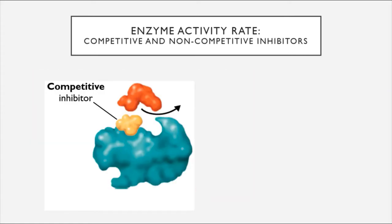Another factor that influences enzyme activity is the presence of molecules called inhibitors, which inhibit the ability of an enzyme to do its job. Inhibitors are molecules that can impede the enzyme by either interacting with the active site or with a site separate from the active site that still influences it. Competitive inhibitors are molecules similar enough to the structure of the substrate that they can bind to the active site, blocking the ability of the true substrate from entering and undergoing transformation—like someone sitting in your chair in class.